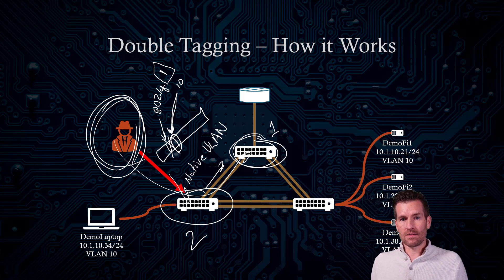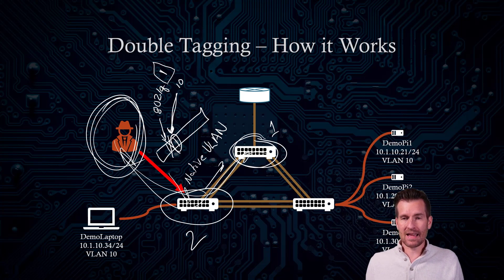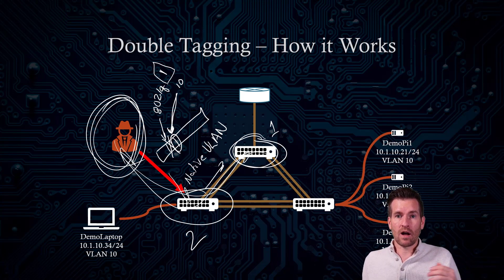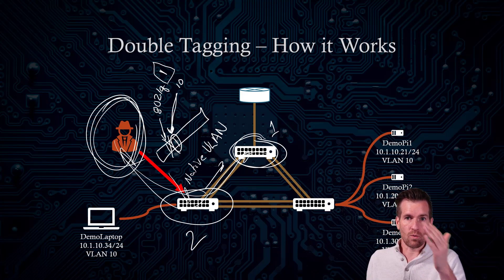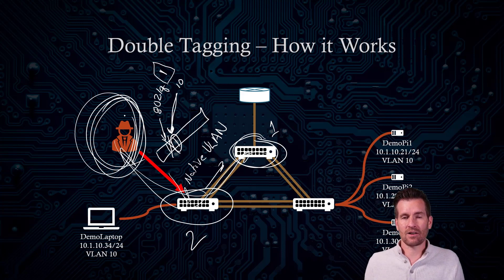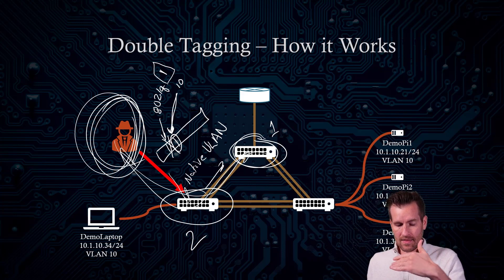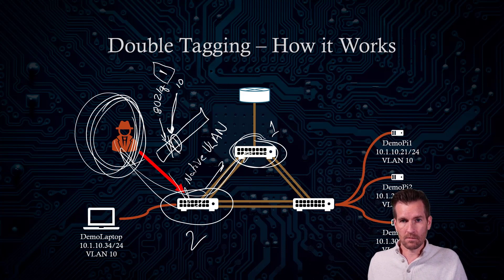The device on that target network can't communicate directly back to the attacker since they're on different VLANs, but perhaps it communicates back via a Layer 3 network instead, routing traffic back on a different network. Or maybe this is just a denial of service attack, where the attacker is attacking another VLAN on your network. There are several ways an attacker can leverage this to do harm.